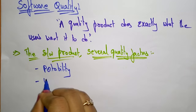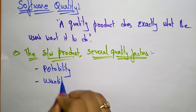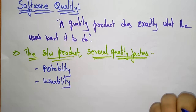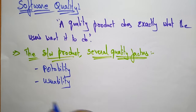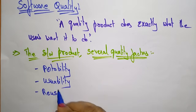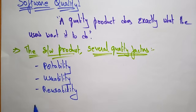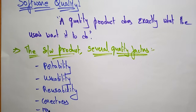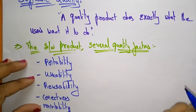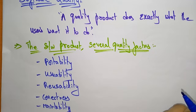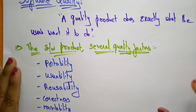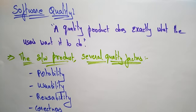The software product should also have usability, reusability, correctness, and maintainability. These are all the several quality factors that indicate a software is a quality product. This is about software quality. Thank you.